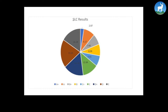Now we have converted that table into a pie chart, and what we have here is the SLC results of the students in the academic year of 2072 and 2073. We have used different colors: blue is denoting the A+ grade which is 2.87 percent, orange is denoting 9.17 percent which is A meaning excellent performance, and the little brown section represents 7.48 percent which is B+.